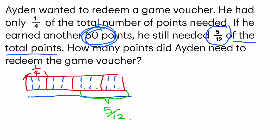So what can I infer? I can infer that this 60 points refers to this portion. Does it make sense? If he earned another 60 points — that's this portion — he still needed 5 out of 12 of the total points. After reading that, it makes total sense. So I can go on to find out how many points Aidan needed to redeem the game voucher.